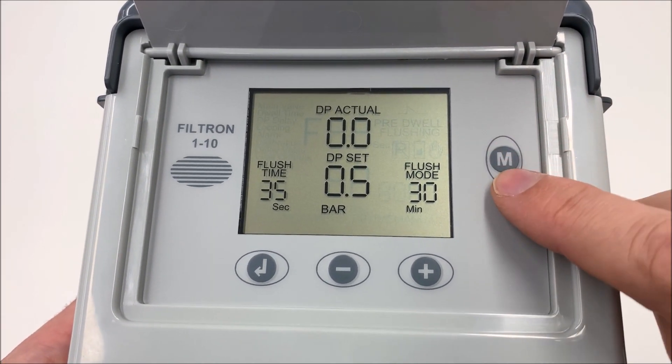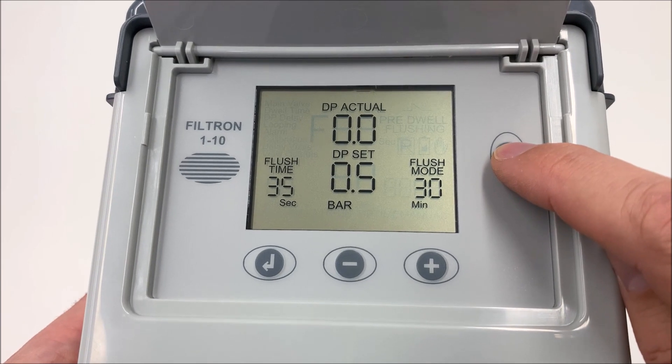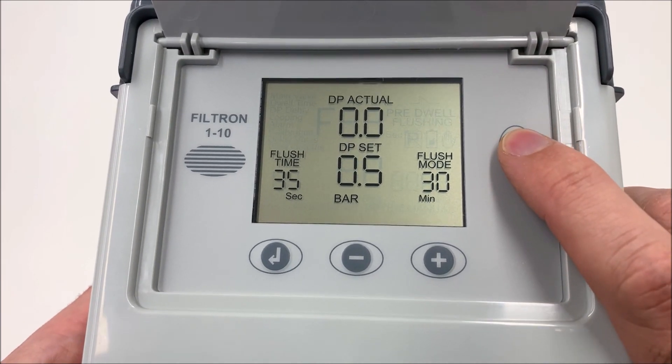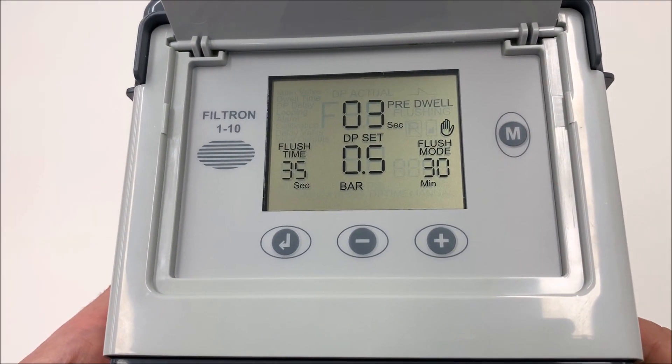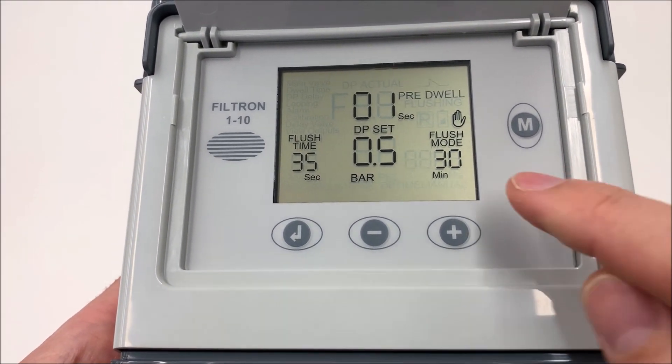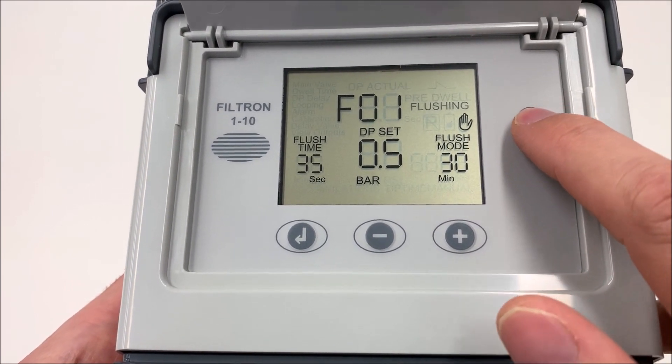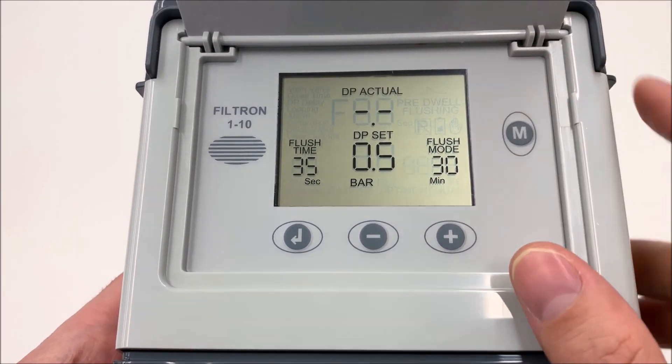The first button we have is the M. M means manual and this is to manually activate a backflush. We can push and this is a backflush. It's starting now. If we want to stop, just push it again.